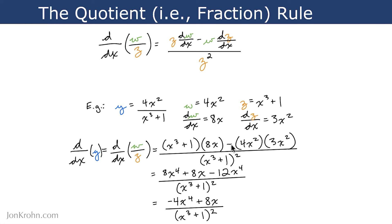And then we subtract from that term this term here, which consists of w, 4x squared, and dz/dx, which we now know is 3x squared. In our denominator, we have z squared, so that's x cubed plus 1 squared.